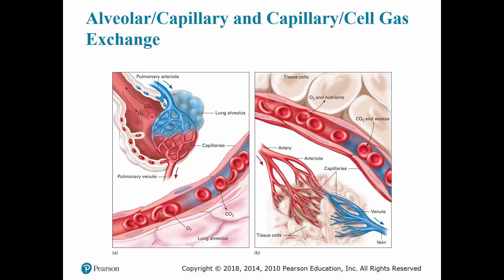Here you have the alveolar capillary exchange. As you breathe in, oxygen moves in and CO2 moves out. At the cellular level, high CO2 and oxygen exchange occurs — oxygen goes across the membrane into the tissue, while CO2 and waste products cross from the cell into the capillaries, into circulation, and are eventually removed from the body.